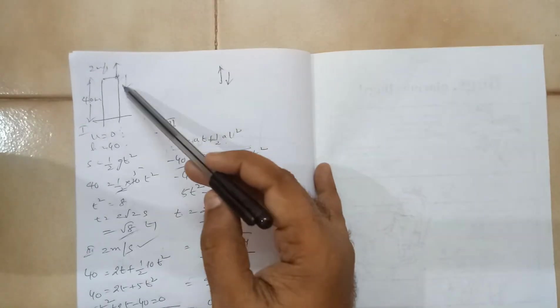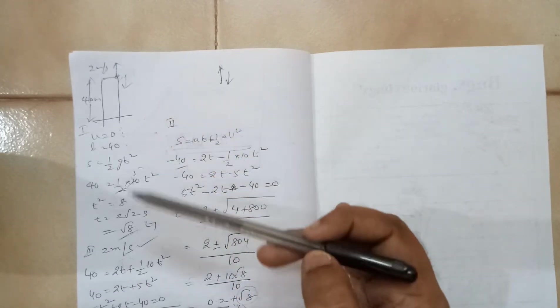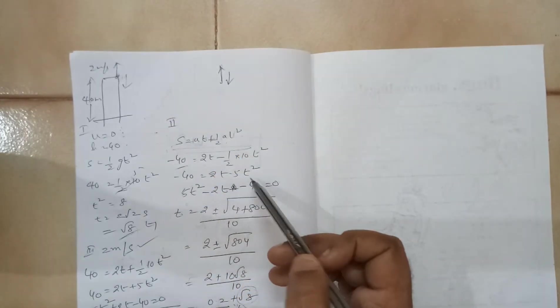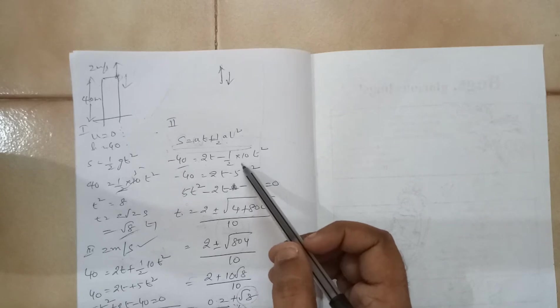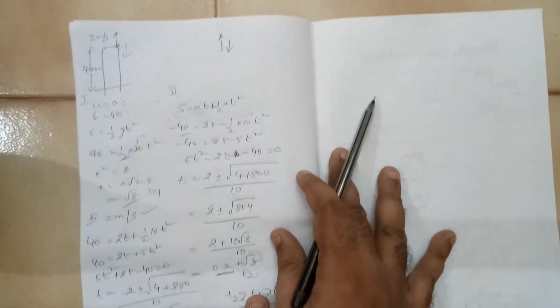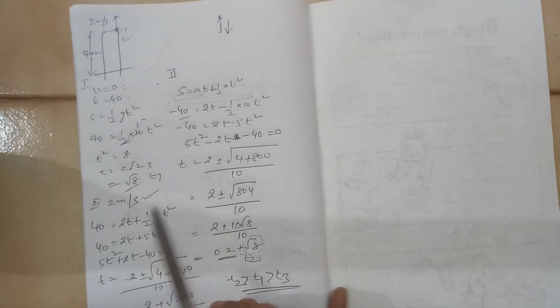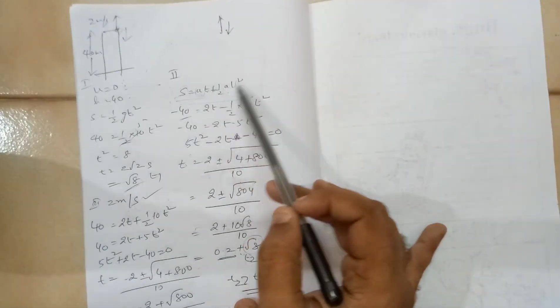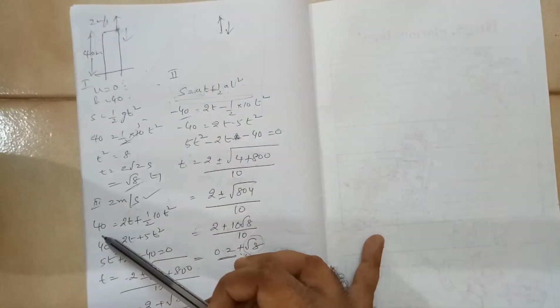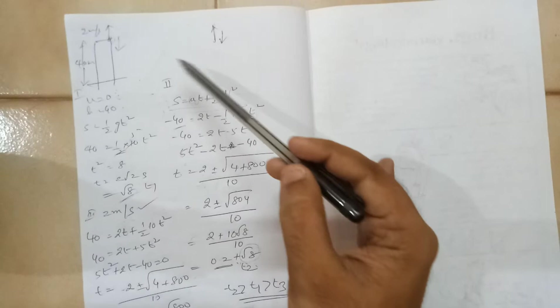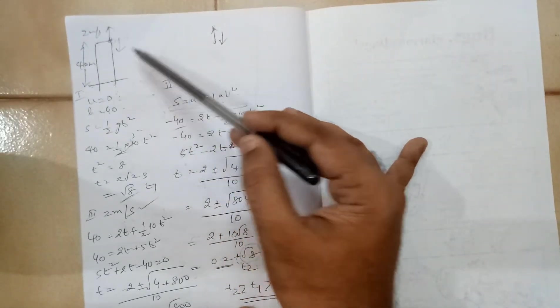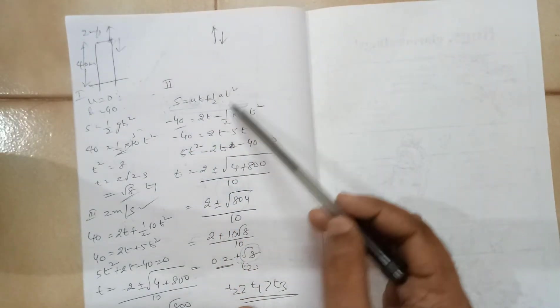Here the motion of the body and the acceleration due to gravity both are in the same direction. So g will be positive here. So we can put it in this equation. You get S equals ut plus half g t squared. S will be plus 40 here. This is the initial position. This is the final position.